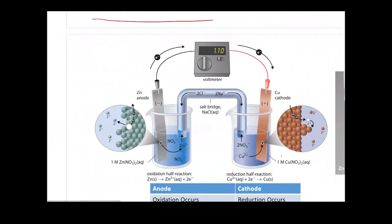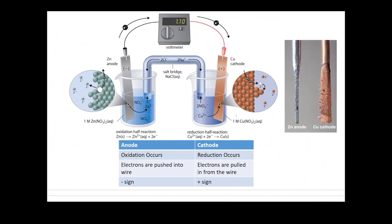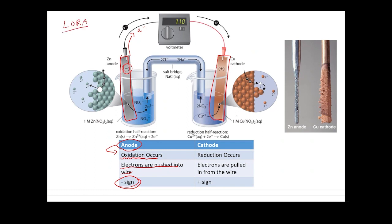As time progressed, people developed a much better understanding of electrochemical cells and introduced specific terminology to define all the components. Inside an electrochemical cell, you always have two electrodes. The electrode that undergoes oxidation is called the anode — electrons are pushed into the wire and it carries a negative sign. To help memorize this, we use the mnemonics LoRa and GRoC: LoRa means the species loses electrons, undergoes oxidation, acts as a reductant, and always occurs at the anode.